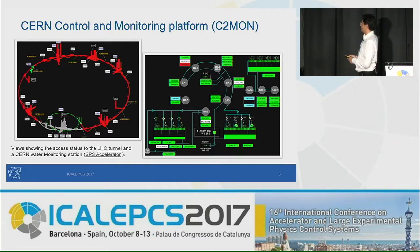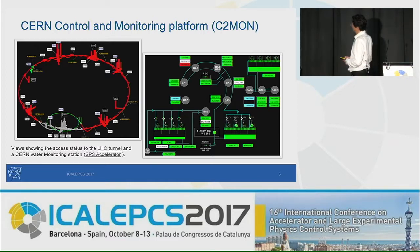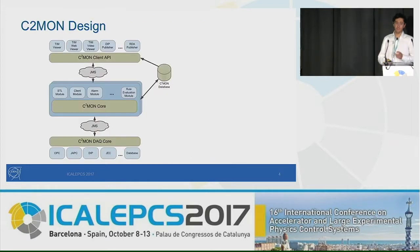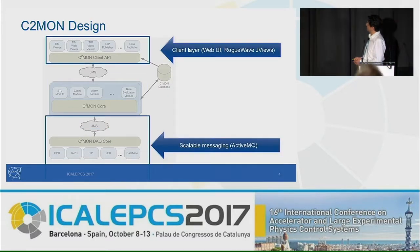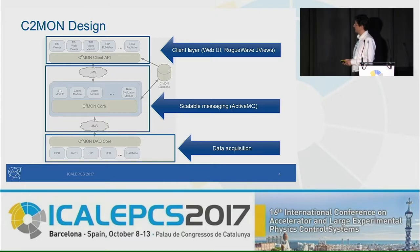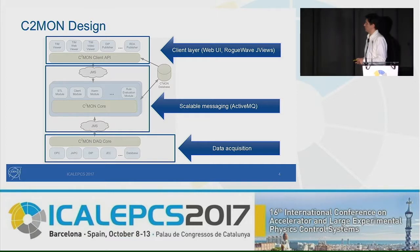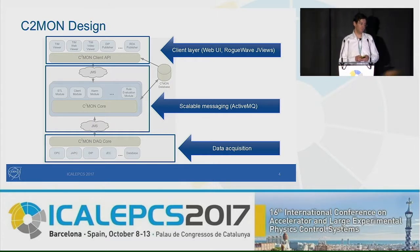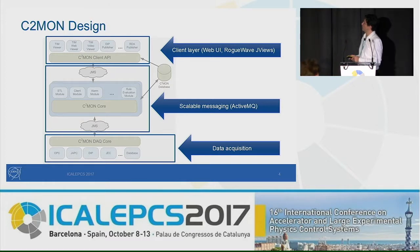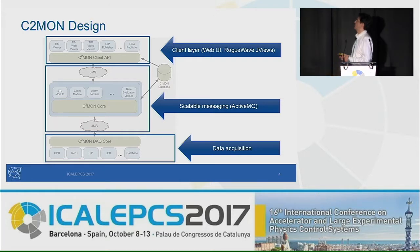Here on the left-hand side, you have the view of the status of access control in the LHC tunnel, and on the right-hand side, you have a monitoring station. The design of C2MON is quite conventional. As with any SCADA, we have a data acquisition layer at the bottom that does all the acquisition from various industrial control protocols — some are CERN-specific, others are industry standards. In the middle, performing message distribution and validation, we have an ActiveMQ engine providing scalable messaging between the DAQ and the client layer at the top. In the client layer, you have typical user interface engines like JViews, IBM JViews, Rogue Wave, or Web UIs.